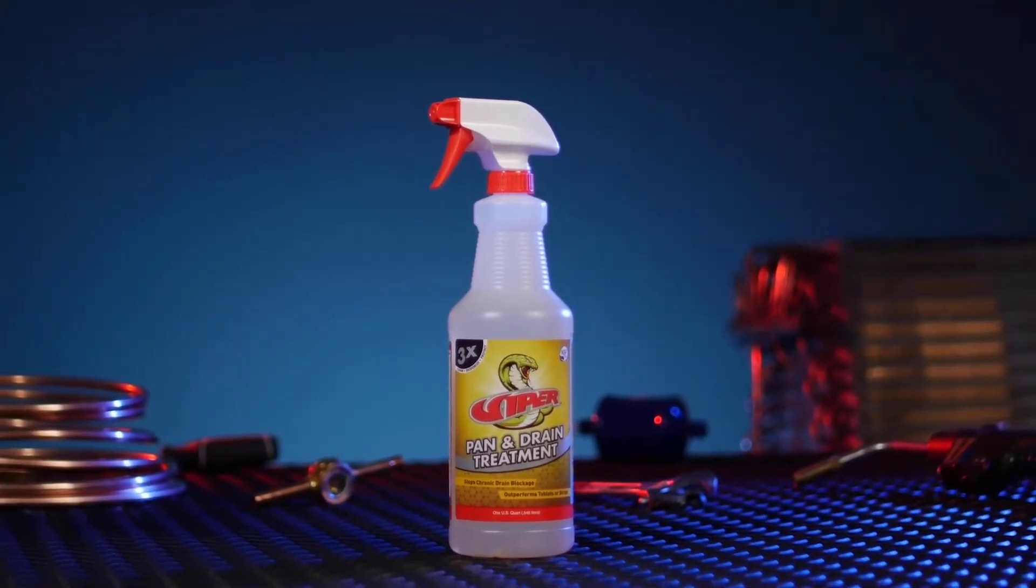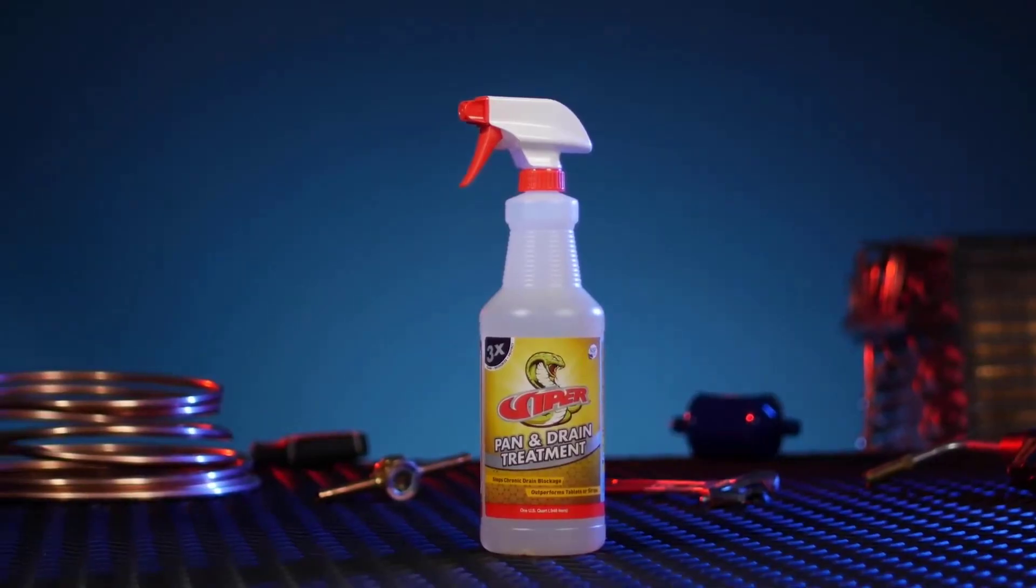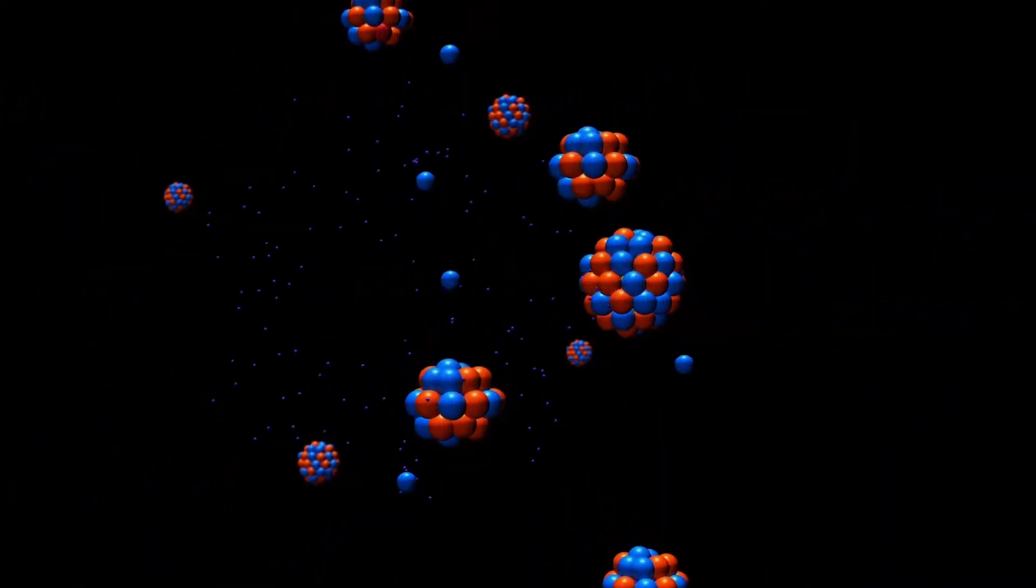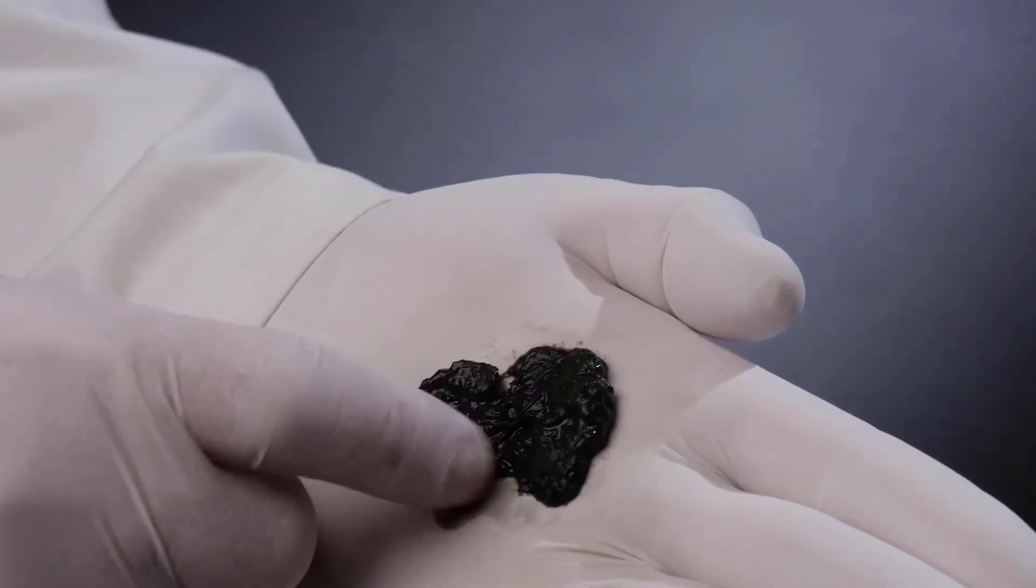What's the best way to stop condensate drain blockage? Discover Viper Pan and Drain Treatment. Viper contains four highly aggressive enzymes that destroy slime and sludge growing in the pan and piping. We've all seen this material before.